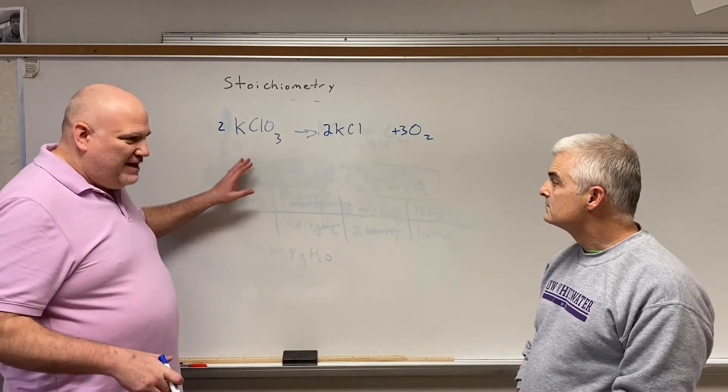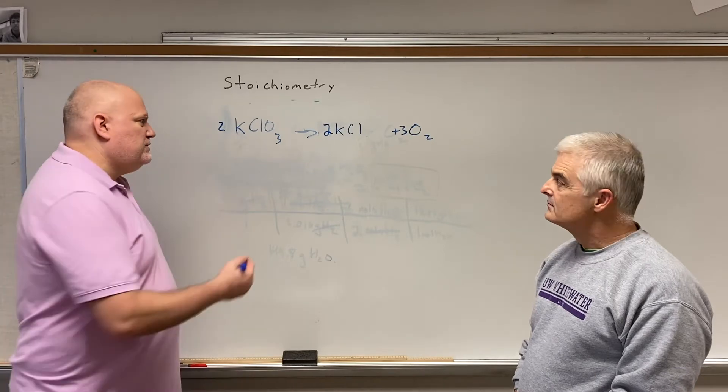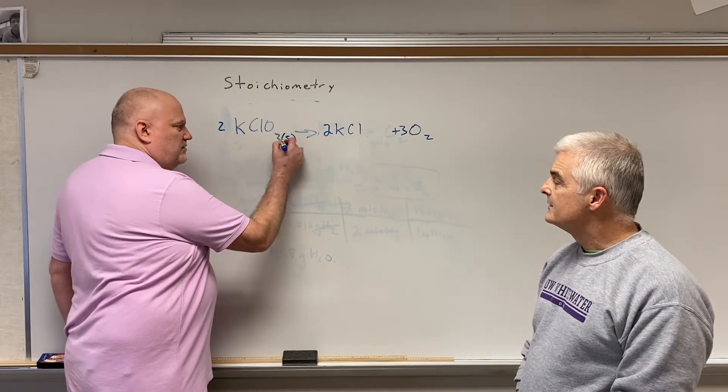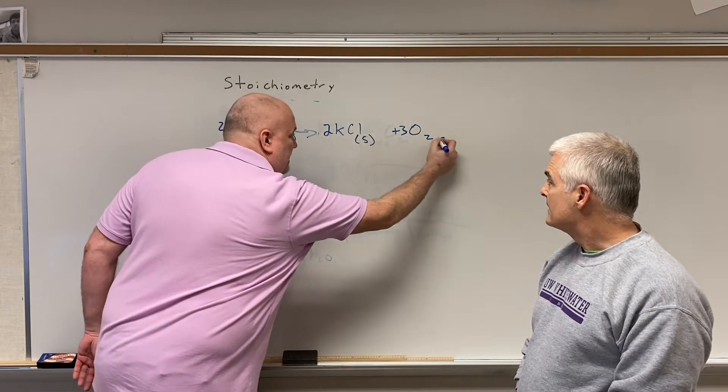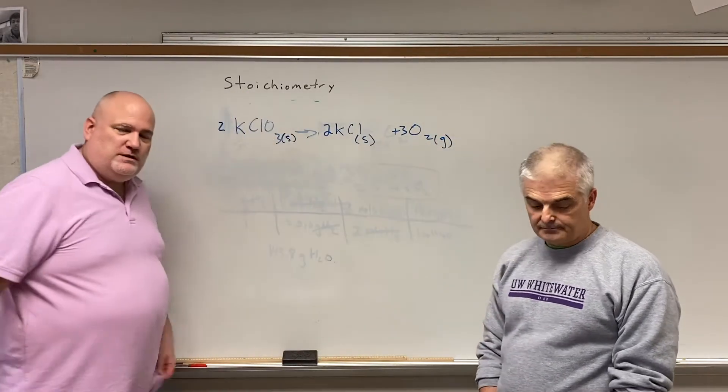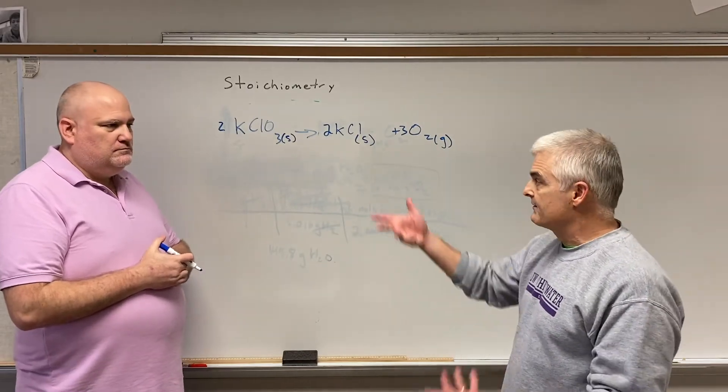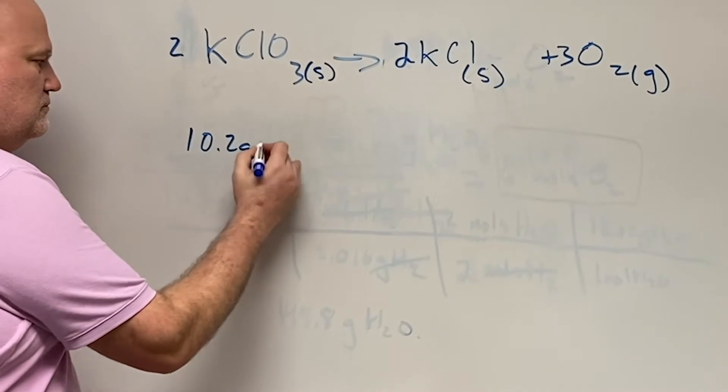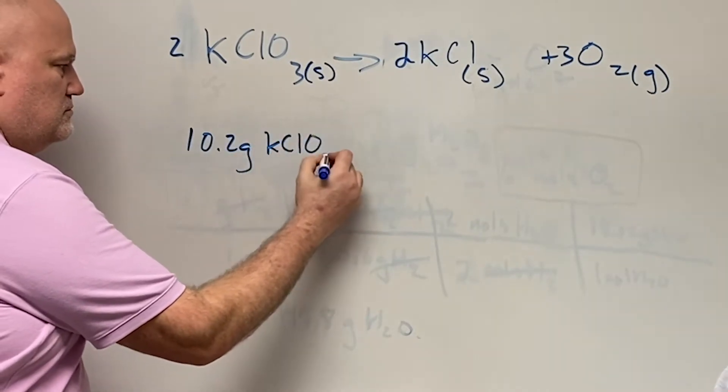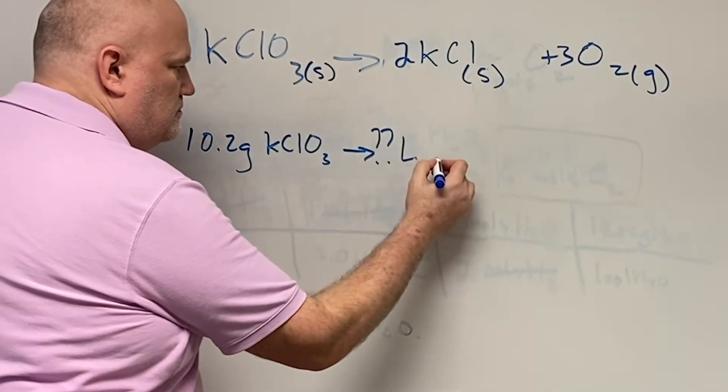Before we go any farther here, it matters when we're dealing with gases that we know which things are gases which aren't. So we're going to put this in here. This is a solid. Yep. This is a solid. Solid. And this is a gas. And that's going to become important in this particular problem. So what we're going to do is we're going to do a problem that has mixed units. So let's say that I've got 10.2 grams of potassium chlorate. And I want to find the number of liters of oxygen gas that are formed.